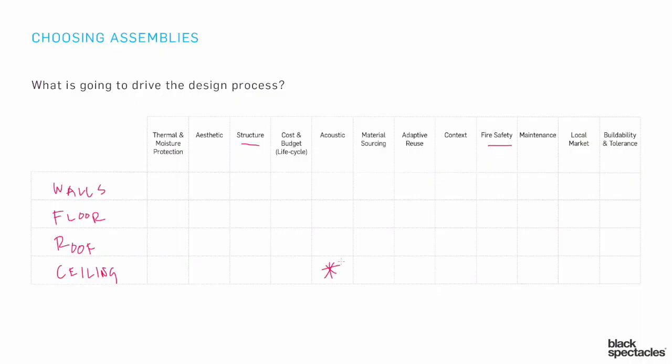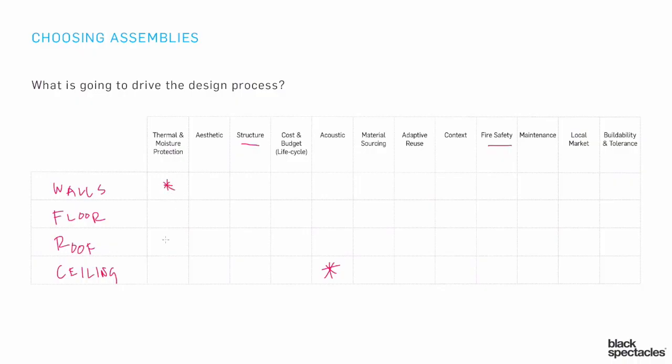Then you could start adding other drivers. Acoustics, from a ceiling standpoint, are going to be huge — a very important element. And obviously thermal and moisture protection for the exterior walls is going to be enormous, as is the roof system. So you start to focus in on where the important issues are, and that tells you what issues need to be detailed later, find their way into specifications, and have clear descriptions in the design development drawings so that the people doing pricing can understand the scale and scope of what they're getting into.